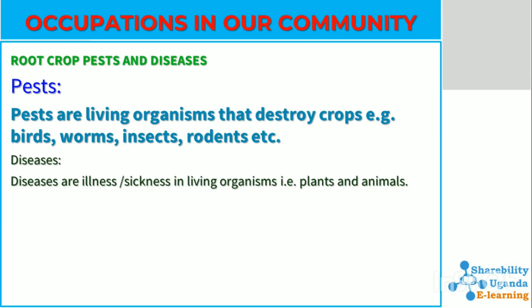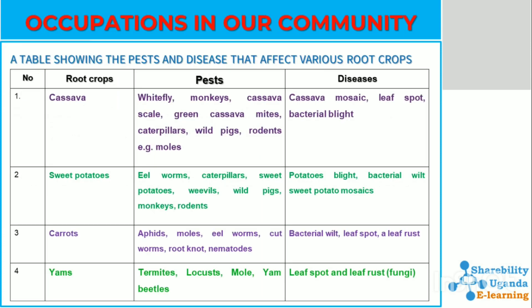Let us look at root crop pests and diseases. Remember, pests are living organisms that destroy or feed on our crops. They include birds, worms, insects, and rodents. Diseases are illnesses or sicknesses that affect living organisms, so crops are prone to diseases. This is a summarized table showing the pests and diseases that affect various root crops — you can pause the video and go through this table carefully.